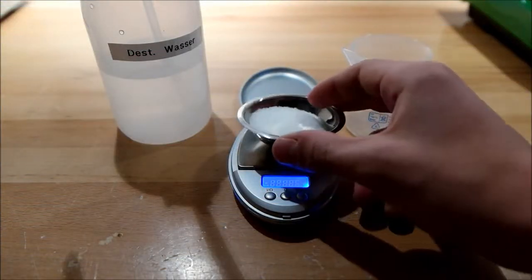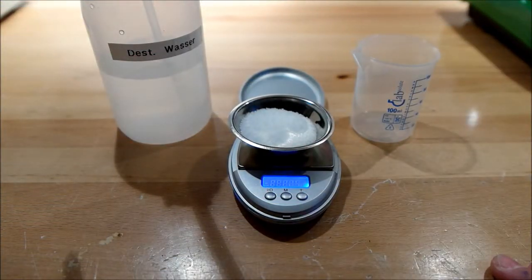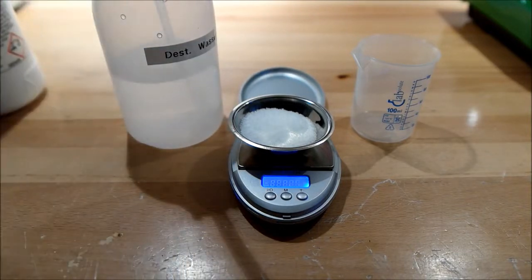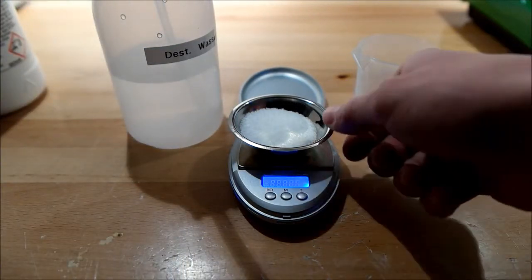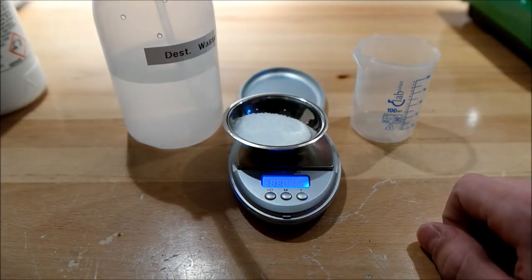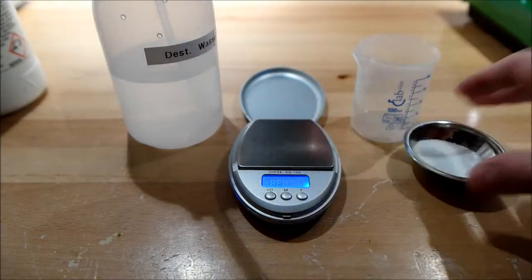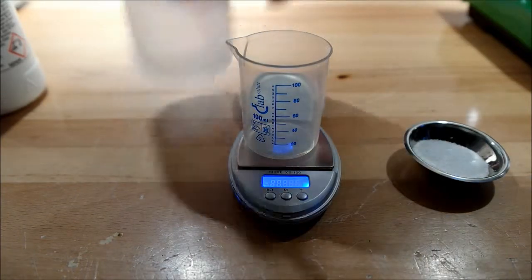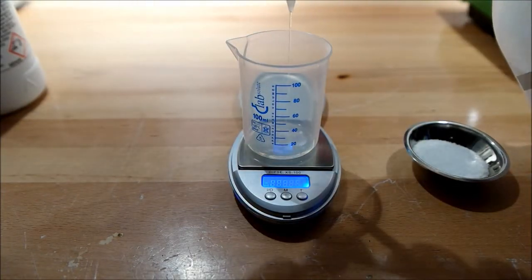In the first step we want to produce a 40% solution of sodium hydroxide with water. So these are 20 grams of sodium hydroxide and now I'm going to add 30 grams of water to produce 50 ml of the 40% solution.